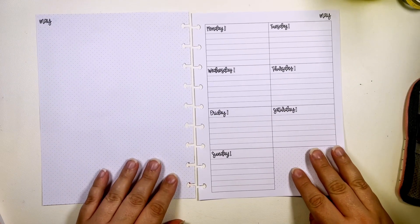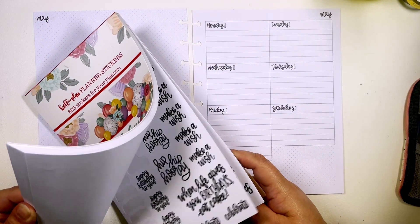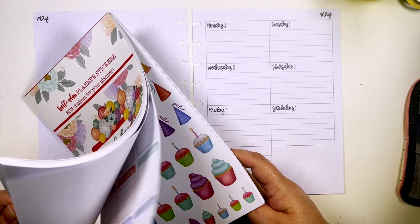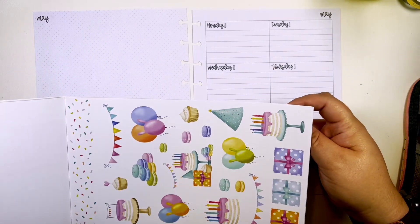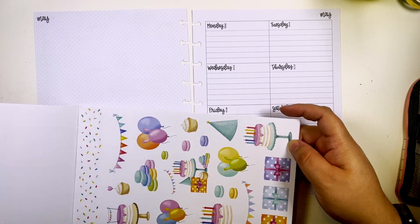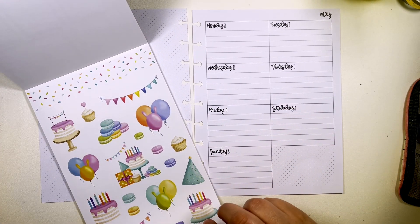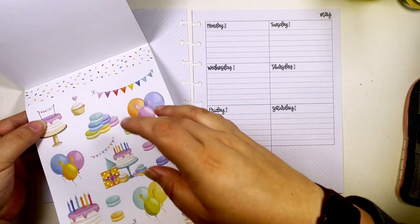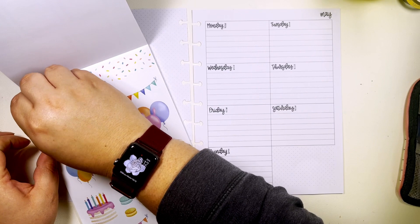I'm gonna use Birthday Basics by Caliber Plan volume 2, and we're just gonna use this set with the confetti and the banners. I feel like it's a pretty traditional birthday set.